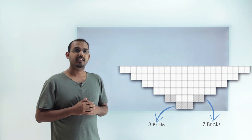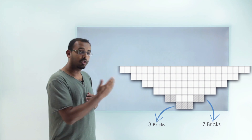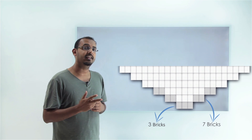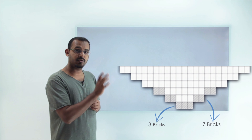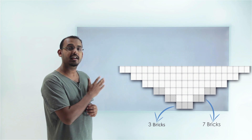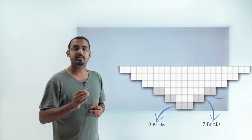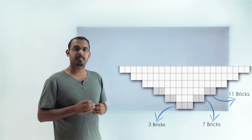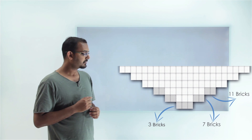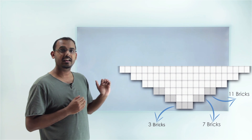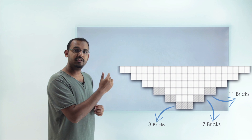In the third layer, two bricks have been added on the left-hand side and two on the right-hand side. So there were seven previous bricks, and with four more added, there are 11 bricks in the third layer. If you go on calculating, the next layer has 15, then 19. The number of bricks in every layer increases by four, because we add two to the left and two to the right.